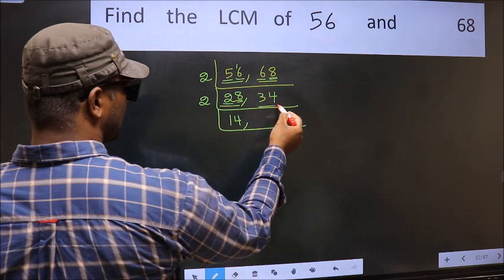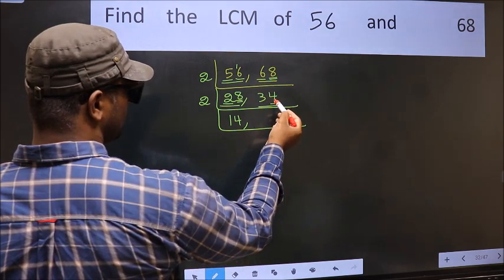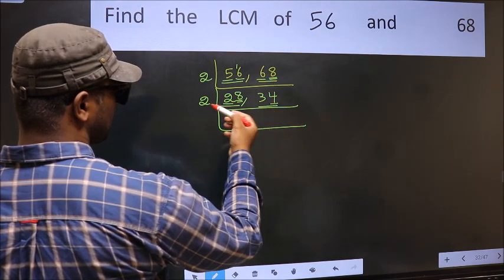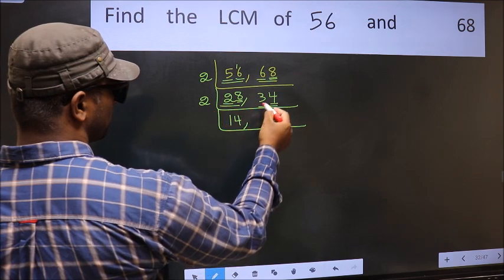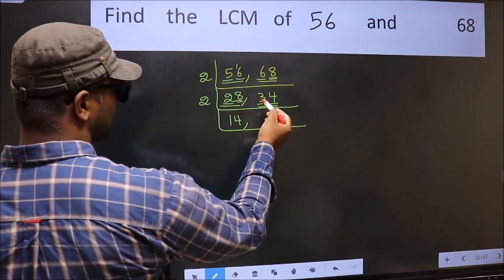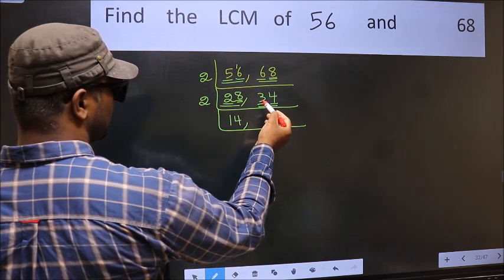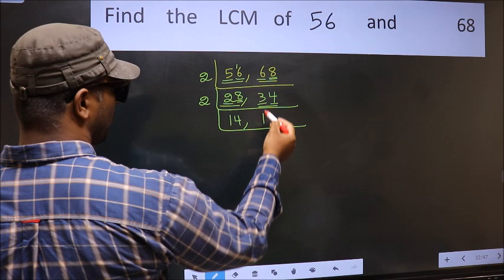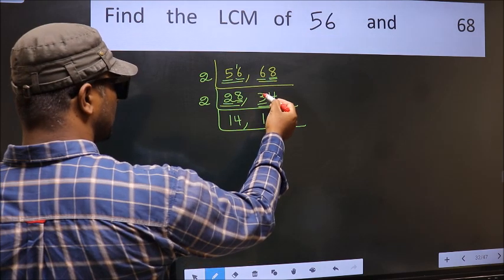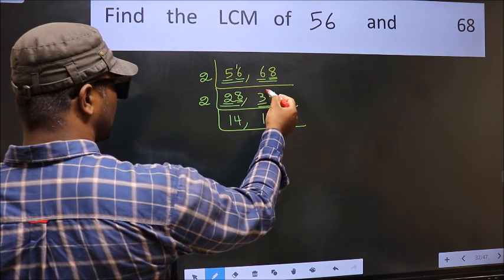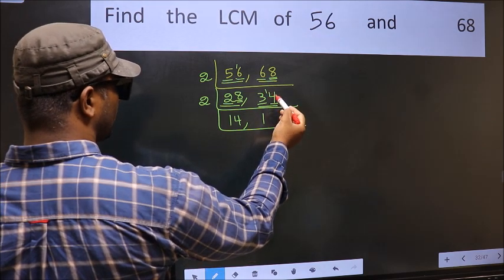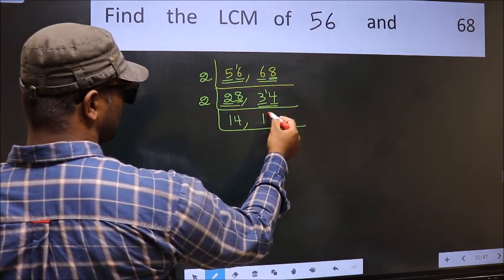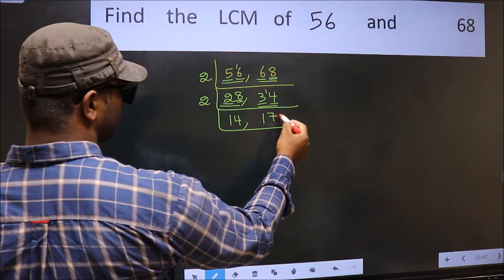The other number is 34. Last digit is 4 — even, so this is divisible by 2. First digit is 3; a number close to 3 in the 2 table is 2×1=2. 3−2=1, carried forward gives 14. We get 14 in the 2 table as 2×7=14.